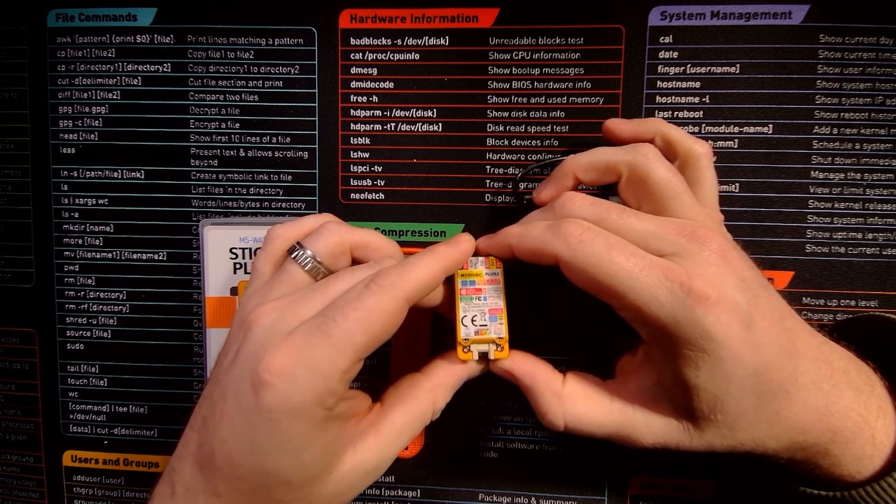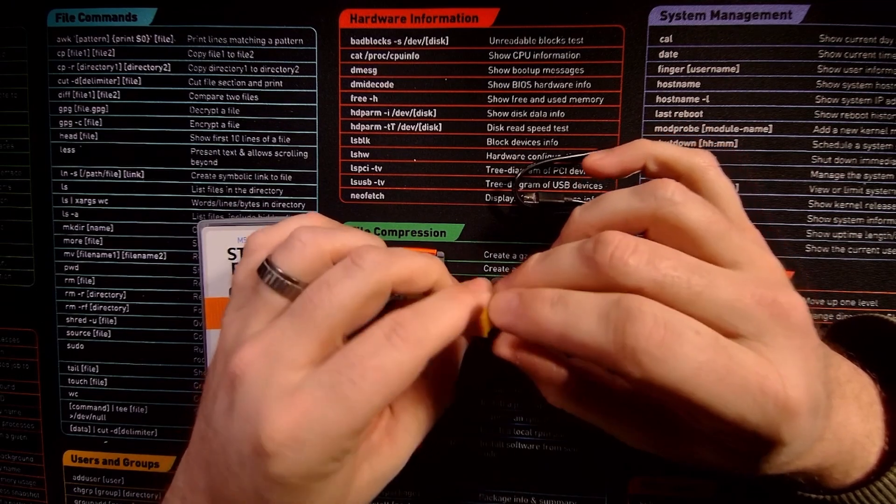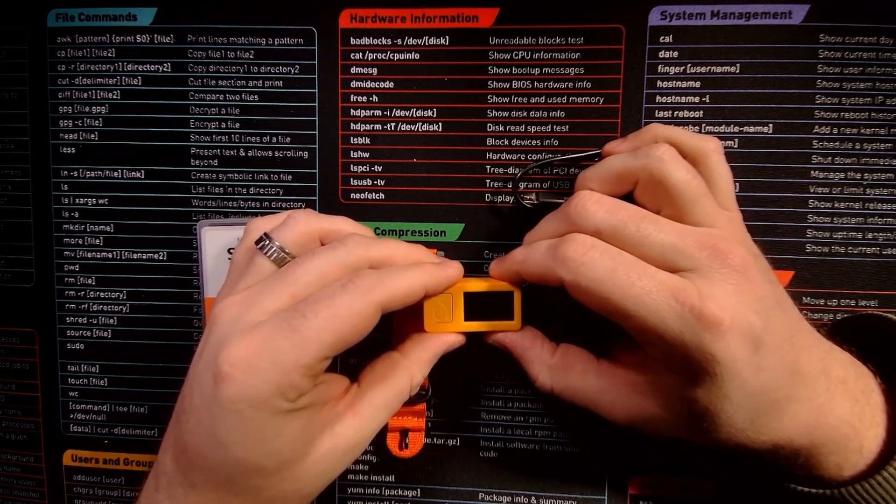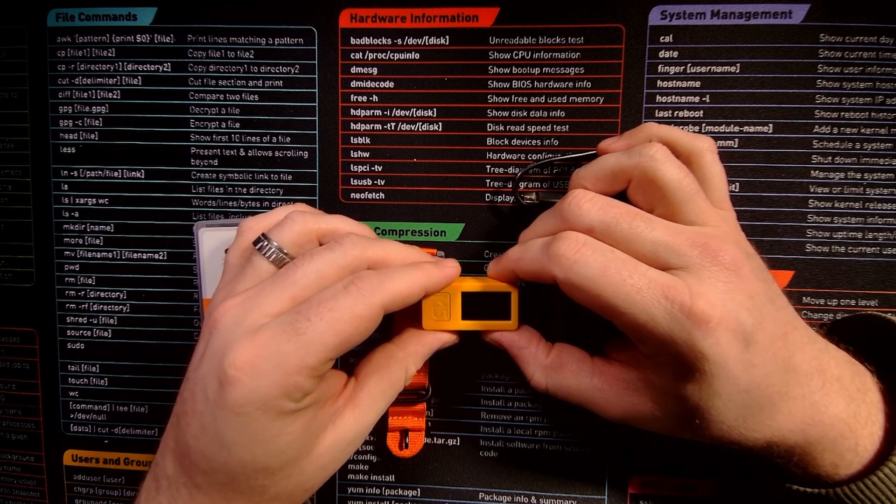We've also got our Grove plug here and we've got GPIO over here as well. This has a built-in accelerometer, ESP32 chip, infrared speaker, and screen, so it's a very useful tool.